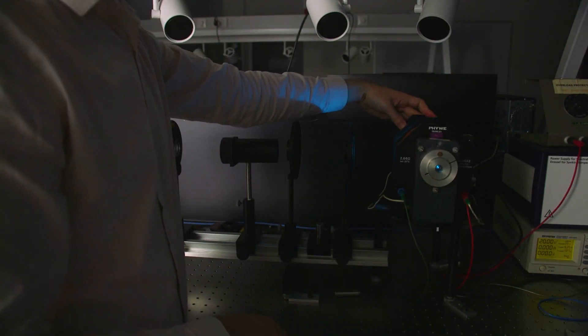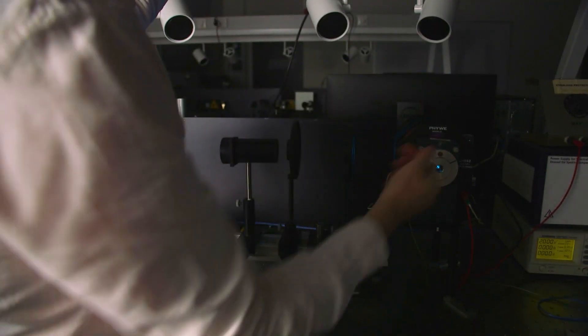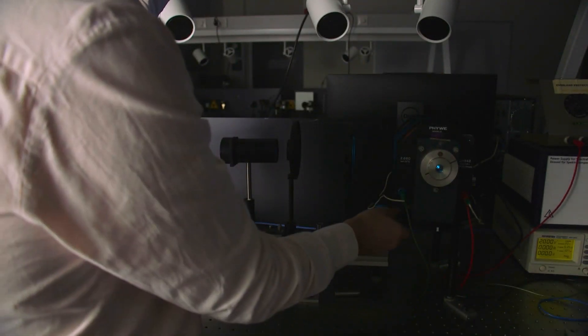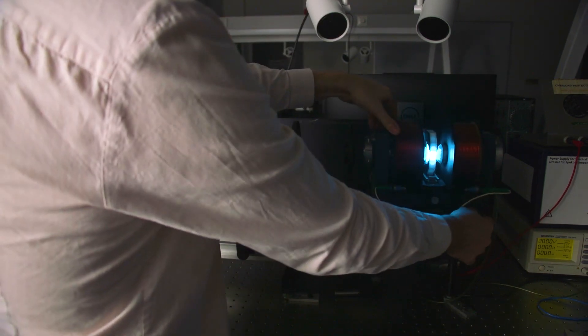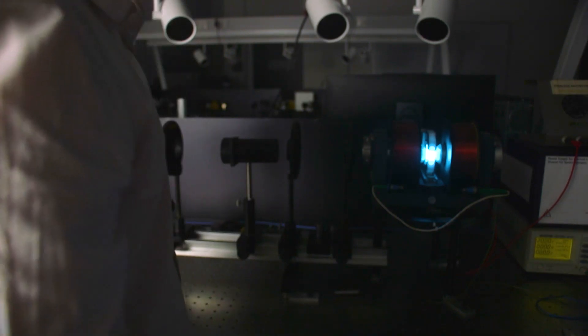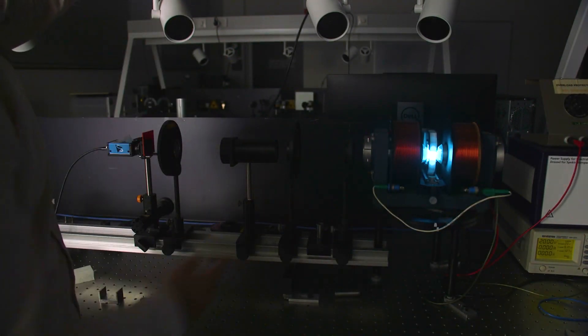So here you can see we've got the magnetic field oriented in this direction and the optical axis is perpendicular to it. And then in this orientation you'll see we've got the magnetic field oriented along the optical axis, i.e. parallel to it.